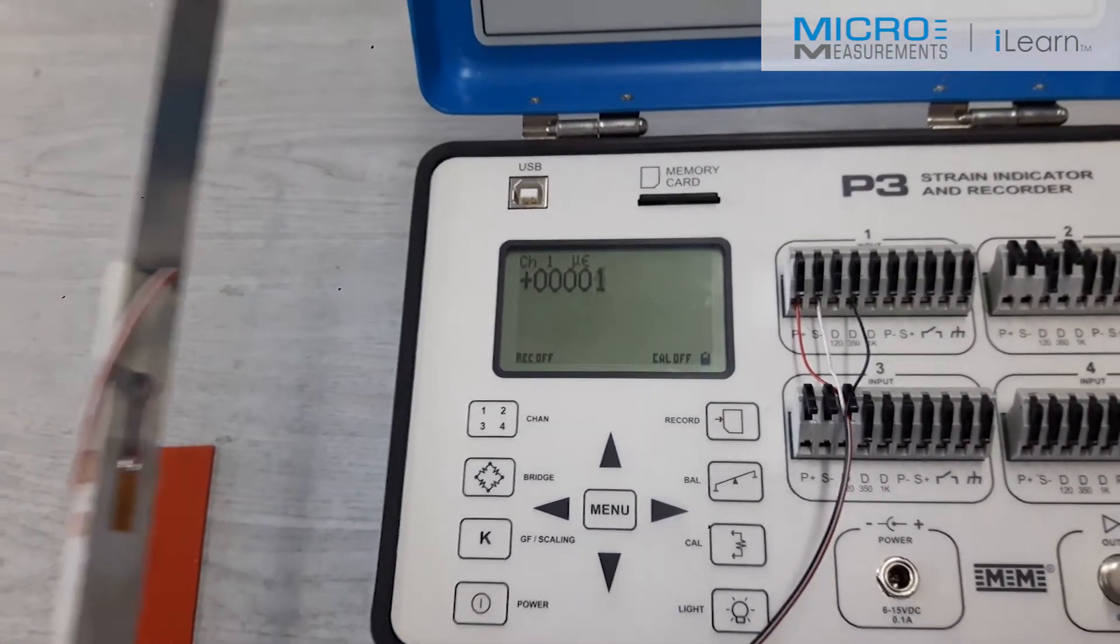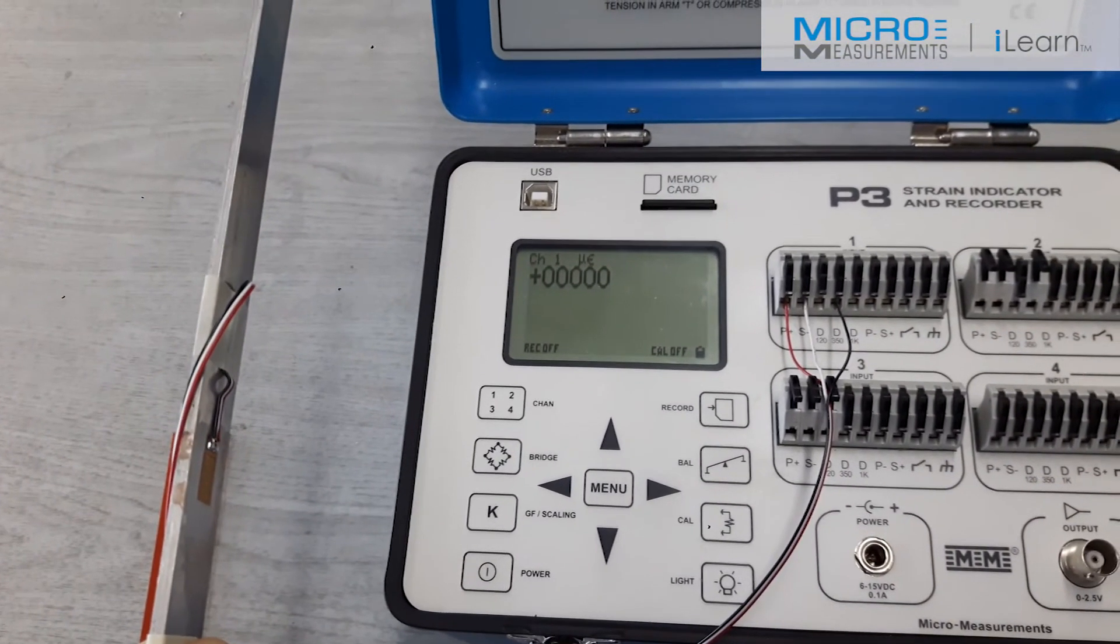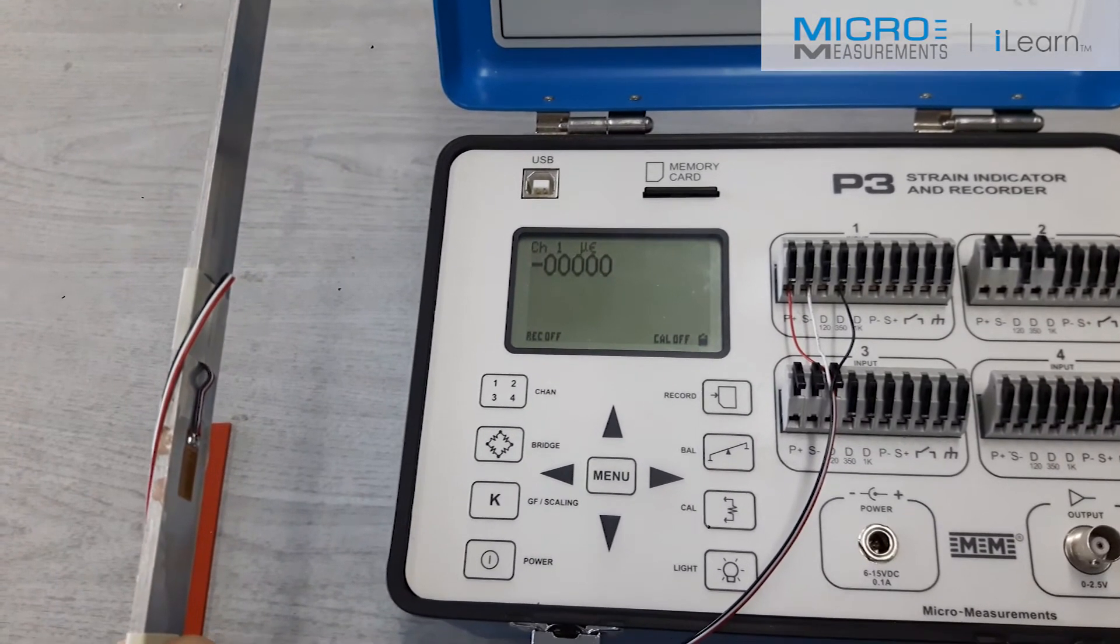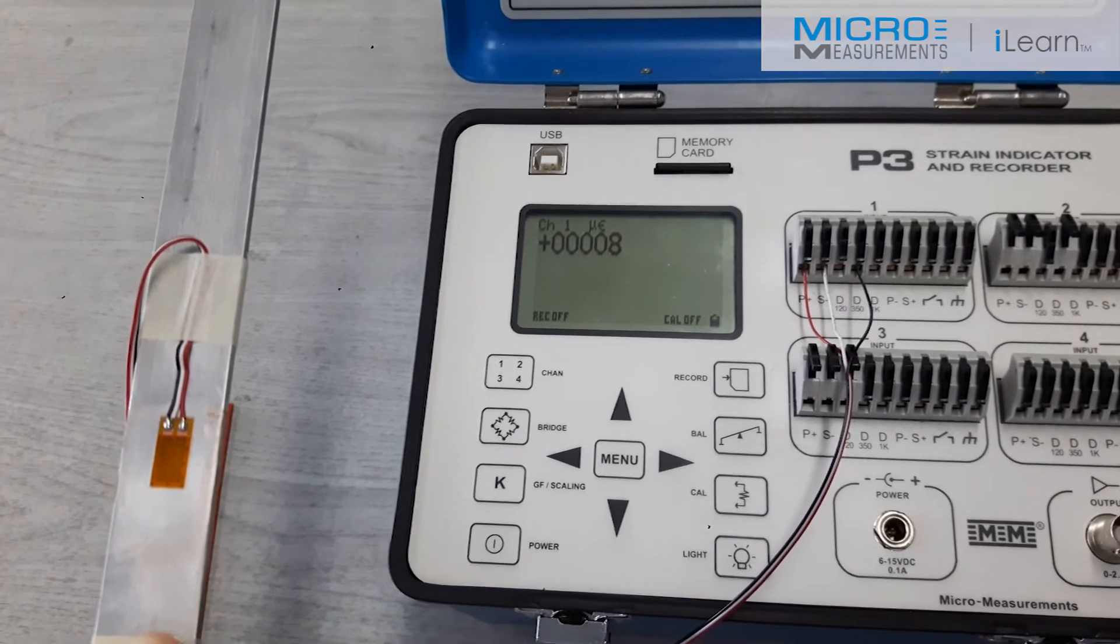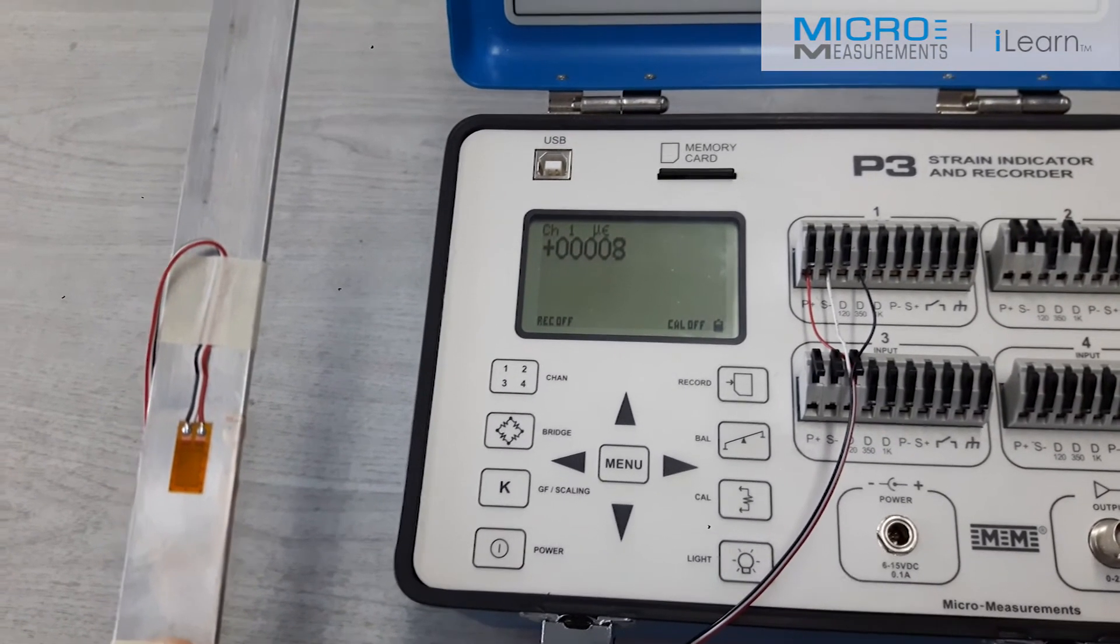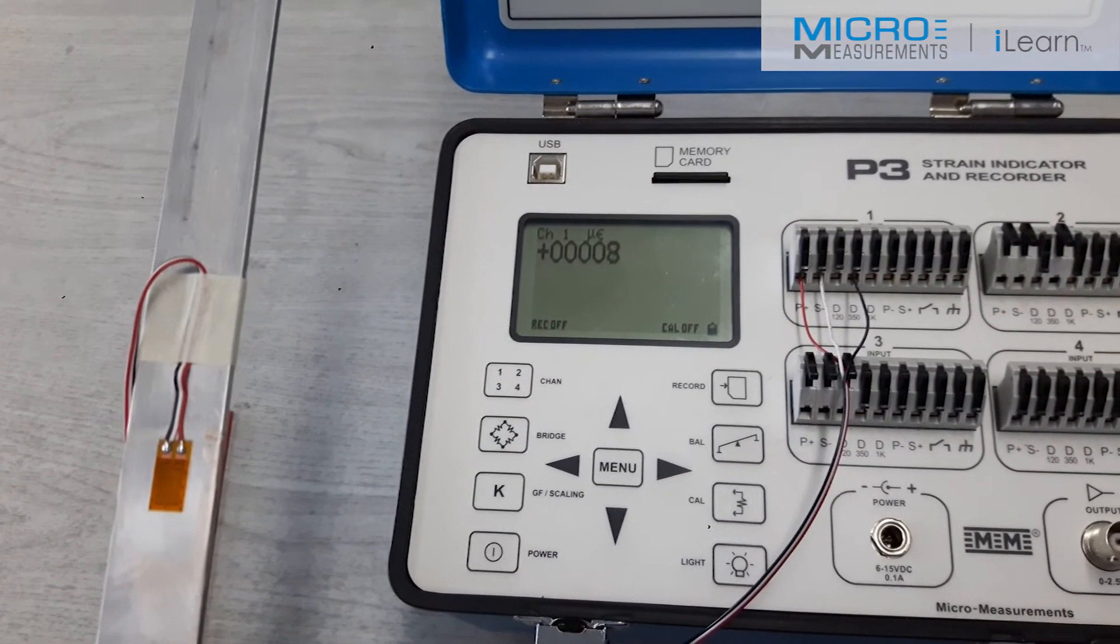If I return the beam to its edge, you can see that I return to zero. Now, seven to eight microstrain on a six-millimeter gauge represents an actual deflection under that strain gauge of between 40 and 50 nanometers.